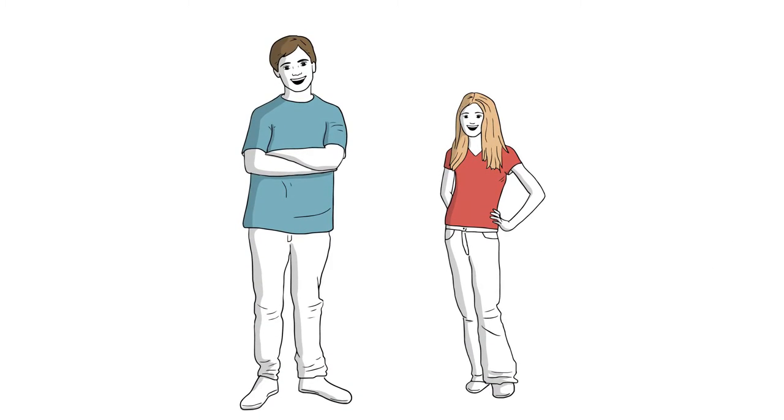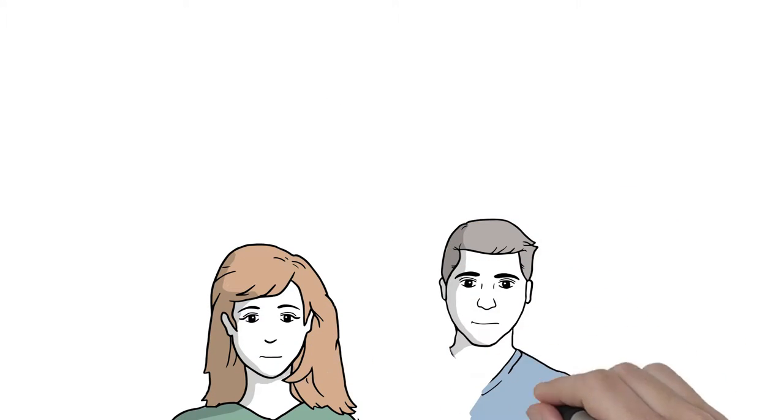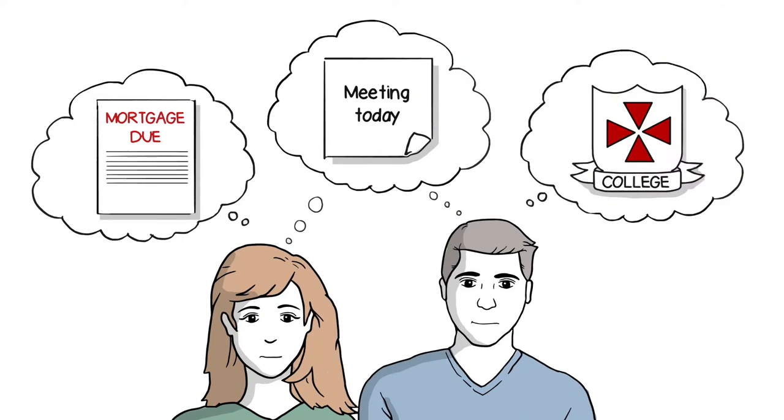Their son Carl is 12 and daughter Wendy is 9. When Bill and Mary aren't thinking about their jobs or their mortgage, sometimes they think about college for Carl and Wendy and wonder how the heck they're going to pay for it.